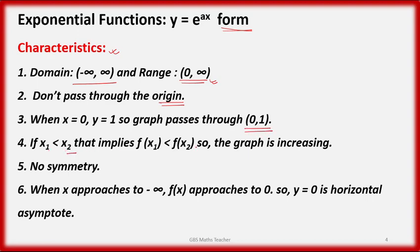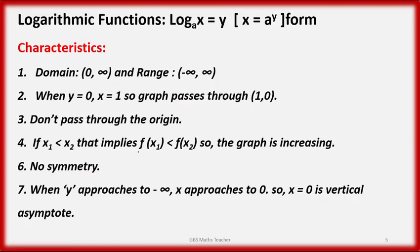As x increases, f(x) increases, so it is an increasing function. As x approaches minus infinity, f(x) or y approaches 0. Therefore, y equals 0, which is the x-axis, is the horizontal asymptote.